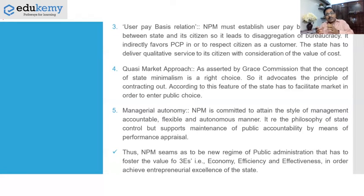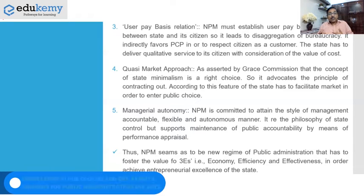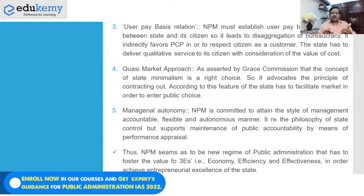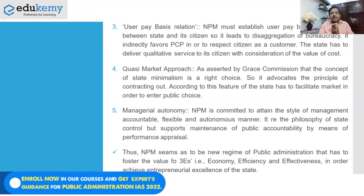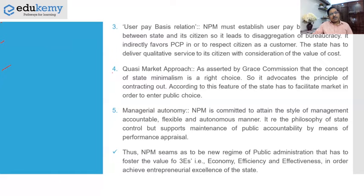The third feature is the user-pay basis relation. The state and citizen should not maintain a raja-praja type of relation; they should maintain a user and service-provider relationship. The state acts as service provider and the citizen acts as user — the user pays money and receives the service in return. This gives NPM its entrepreneurial character.